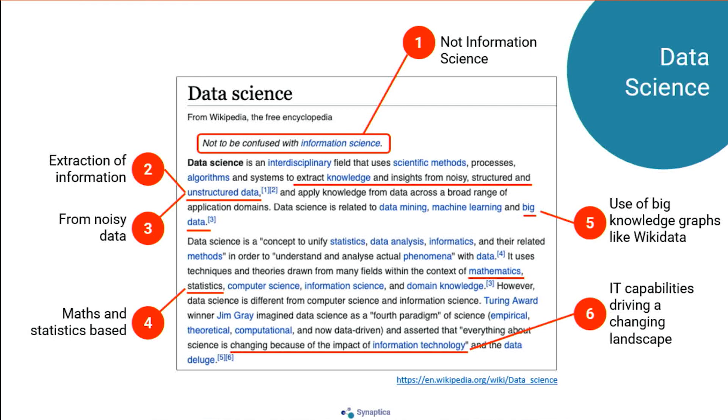Data science is very much math and statistics based. It can use — doesn't have to, but it can use — big knowledge graphs like Wikidata. One of the attributes worth noting is that IT is driving the changing landscape; there are things we can do now that we could not do five or ten years ago.